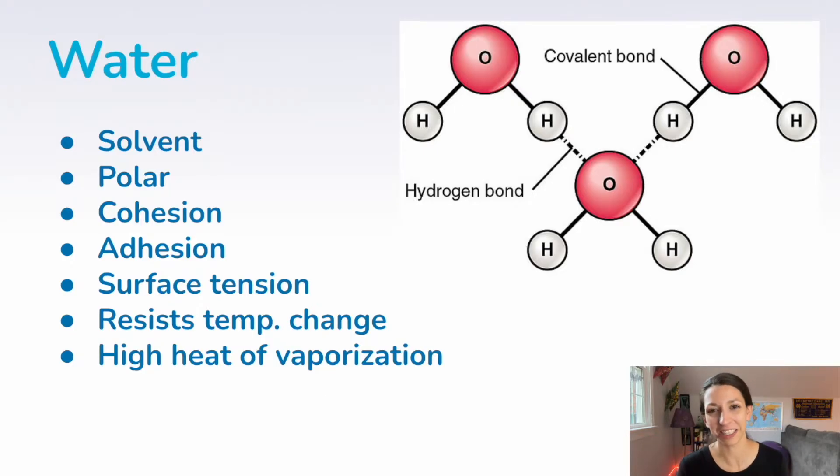That is crucial for temperature regulation in organisms and helps us maintain a stable internal environment. It also has a high heat of vaporization, which means it takes a lot of energy to convert from liquid to gas. So in cooling processes, when there's liquid sweat on our skin, the evaporation decreases the temperature of our body by absorbing some heat during that liquid to gas phase change.